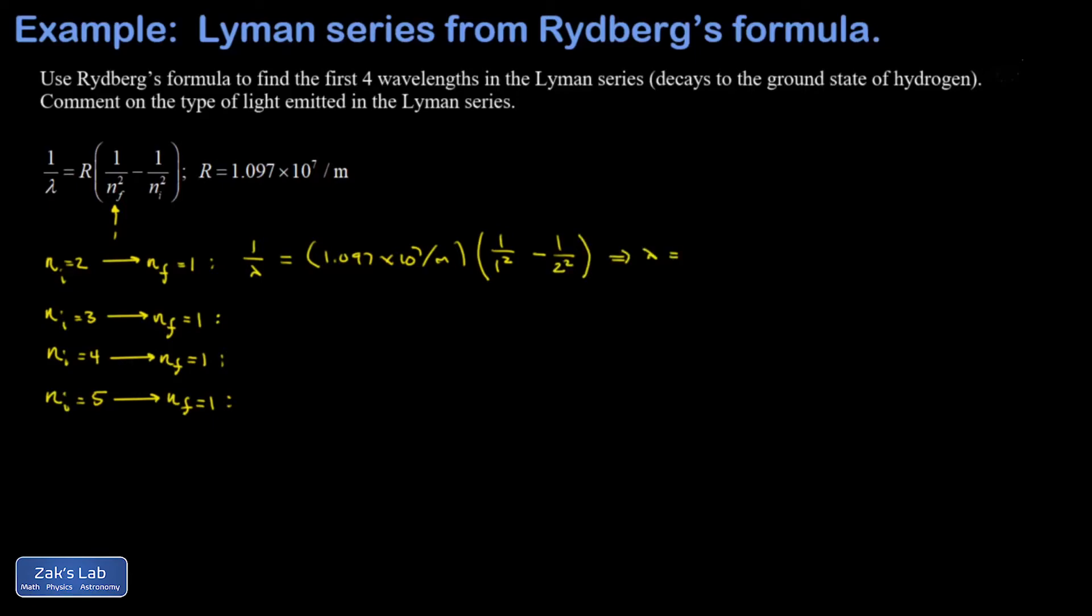So I'm just going to do this all at once in my calculator. In this piece, that's a 1 minus 1 fourth, which is 3 fourths. Notice that you always have to have your smaller value of n in the first term, otherwise this will come out negative.